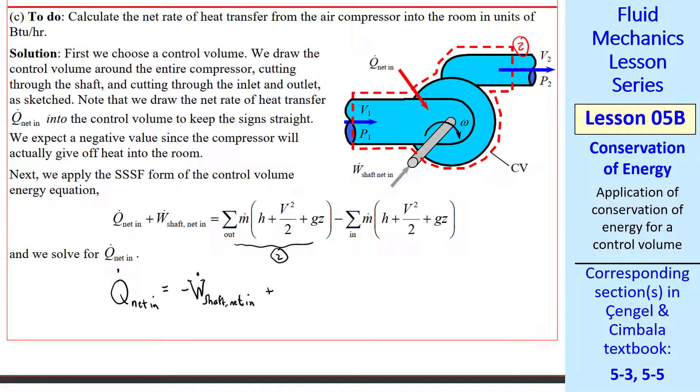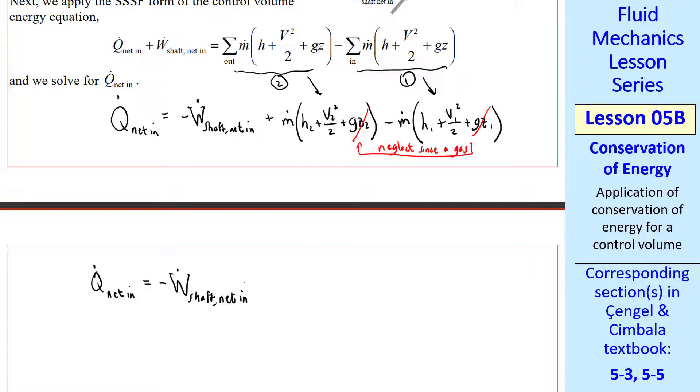Let's write this equation out: Q̇_net_in equals, put the power term on the right, negative Ẇ_shaft_net_in. There's only one outlet, what we called 2. So we have ṁ times the quantity h₂ + V₂²/2 + gz₂. Likewise, there's only one inlet, which we called 1. So this term becomes the same thing except with subscripts 1. We'll neglect the potential energy term since this is a gas. Typically, the potential energy change is negligible compared to these other terms when you're talking about a gas. So let's simplify. Q̇_net_in equals negative Ẇ_shaft_net_in, and noting that by conservation of mass, ṁ has to be the same. So we can combine all these terms. We get ṁ times (h₂ - h₁ + (V₂² - V₁²)/2).